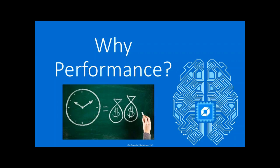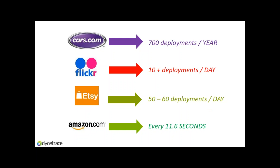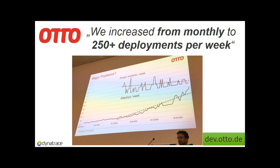One critical aspect is that we see a lot of companies going towards more rapid deployment models. Cars, Flickr, Amazon, and now even traditional companies like Otto — a German retail company — managed to go from monthly to 250 deployments per week. The folks from ThoughtWorks who helped Otto first broke apart their monolith into smaller services and then became much faster in deploying. But it's not only about deploying fast — it's also about deploying something that is fast.